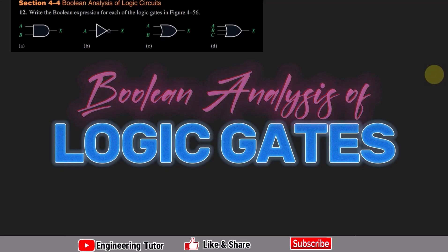Welcome back guys, so this is section 4.4 and from here we will start the Boolean analysis of logic circuits. We have different logic circuits which we have covered in our theory section. This is question number 12 and we have to write the Boolean expression for each of the logic gates in Figure 4.56.